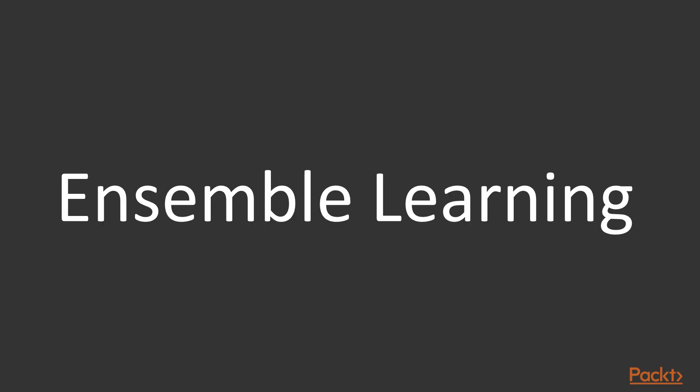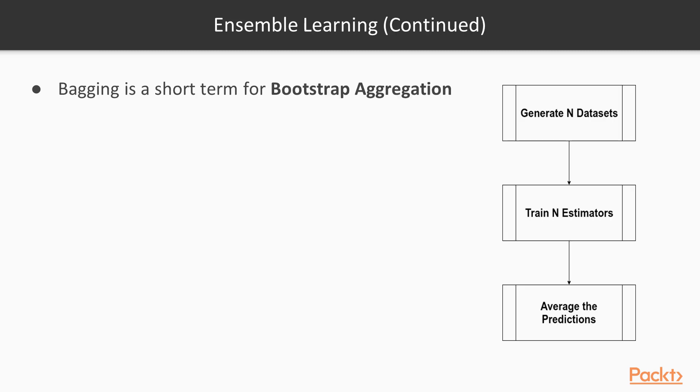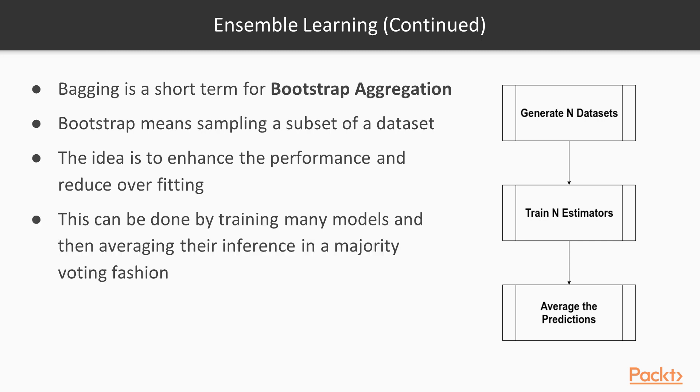Now it's time for one of the most interesting and most often used concepts in machine learning, which is ensemble learning. It consists of two main ideas: bagging and boosting. In this section we focus on bagging. Bagging is a short term for bootstrap aggregation. In statistics, bootstrap means sampling a subset of the data set. The idea is to enhance the performance and reduce overfitting. This can be done by training many models and then averaging their inference in a majority voting fashion. First, the data set is split into n subsets, where n stands for the desired number of models to be trained.